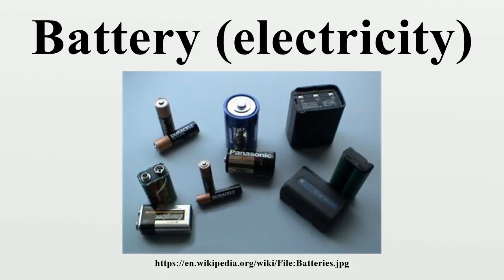Principle of operation: Batteries convert chemical energy directly to electrical energy. A battery consists of some number of voltaic cells. Each cell consists of two half-cells connected in series by a conductive electrolyte containing anions and cations.